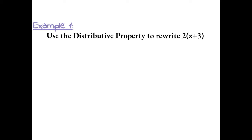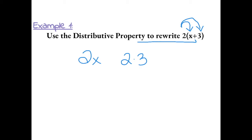Example 1: use the distributive property to rewrite 2 times the sum of x and 3. So the 2 on the outside needs to be distributed to the x, and that becomes 2 times x. And then the 2 needs to be distributed to the 3, and that becomes 2 times 3. Then whatever operation symbol is in the middle, you bring over, which in this case is the plus sign.